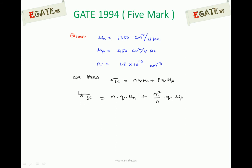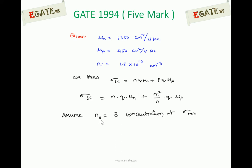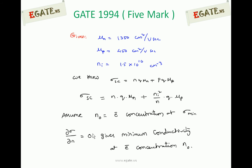The conductivity of the semiconductor will be minimum for some electron concentration n, which we call n₀. So n₀ is the electron concentration at which conductivity is minimum. The general condition to find minimum conductivity is dσ/dn = 0. The n value that satisfies this derivative is denoted n₀, giving minimum conductivity at electron concentration n₀.